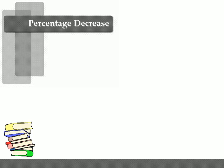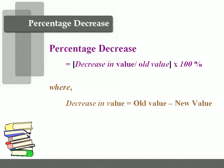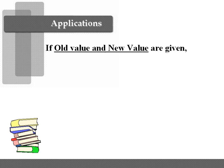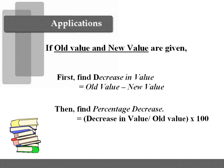Now we will learn about percentage decrease. Percentage decrease means a decrease in value in terms of percent. The formula for percentage decrease is: decrease in value divided by old value, times 100, where decrease in value equals old value minus new value. To implement the formula, first find the decrease in value by subtracting the new value from the old value, then apply the formula: decrease in value divided by old value times 100.